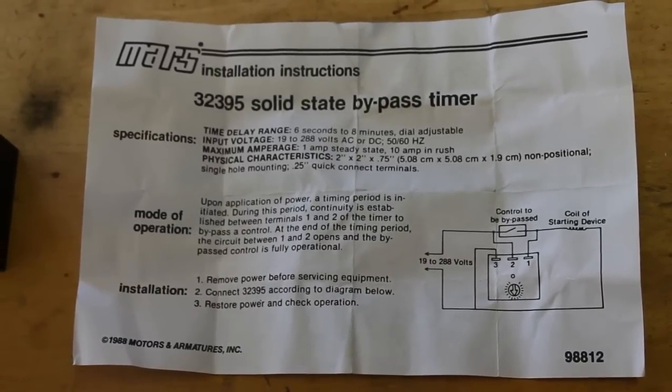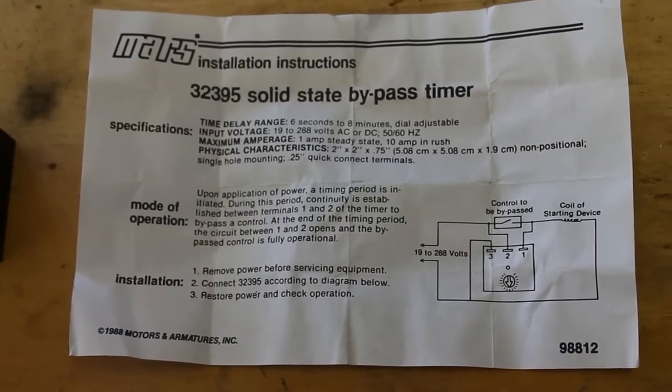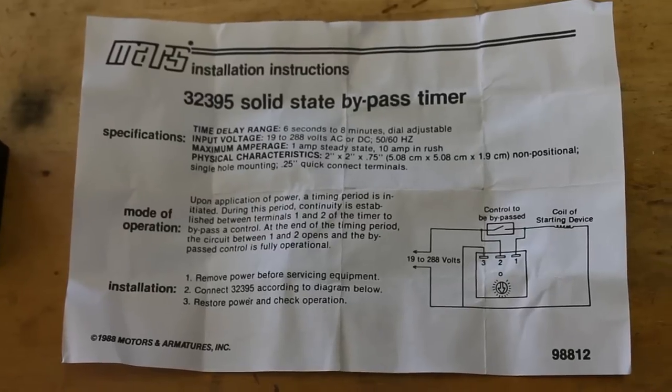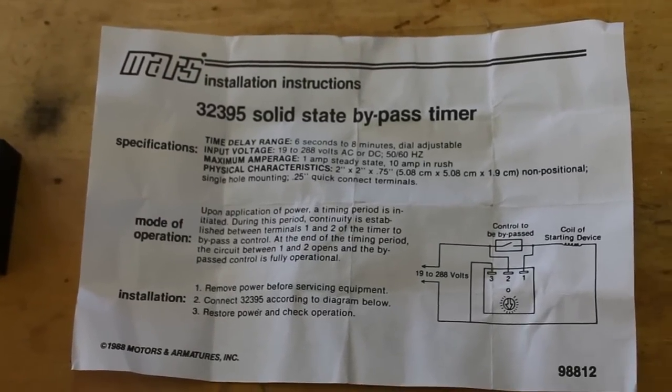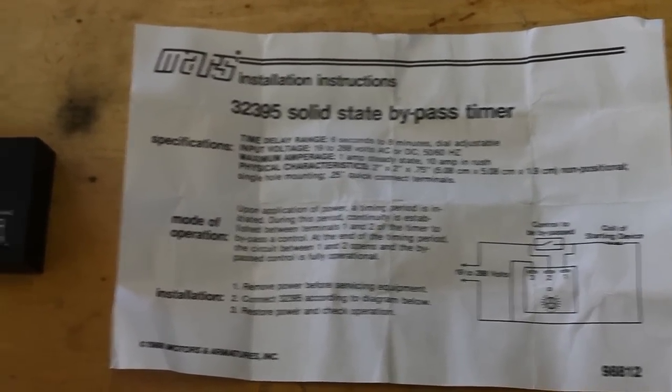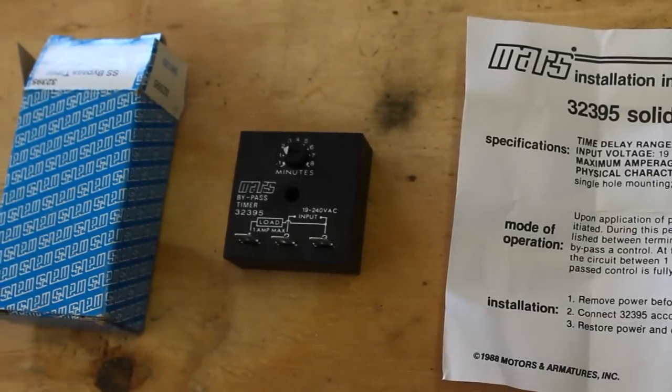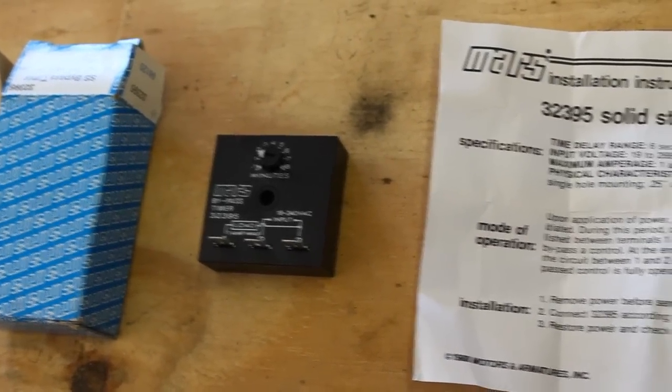The suction pressure will often dip very low then rebound as the machine runs. We don't want to trip a switch every time we have a startup. This relay will allow us to bypass that safety for a certain period of time while our unit starts up.